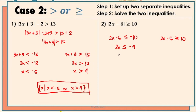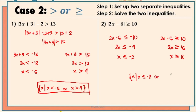Removing the numerical coefficient 2 gives us x is less than or equal to negative 2. On the right side, we also remove the negative 6 by adding positive 6 on both sides, giving us 2x is greater than or equal to positive 16. Removing the coefficient 2 gives us x is greater than or equal to positive 8. The final answer is the set of x such that x is less than or equal to negative 2, or x is greater than or equal to positive 8. This means the possible values are numbers less than or equal to negative 2, including negative 2, or numbers greater than or equal to 8, including 8 itself.